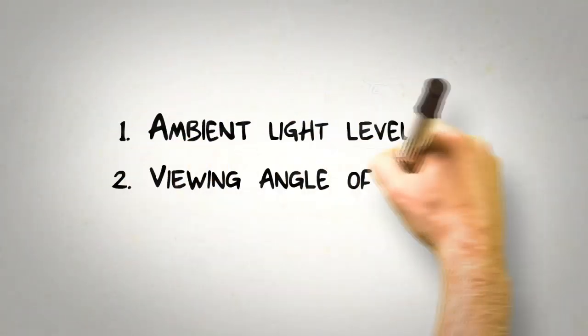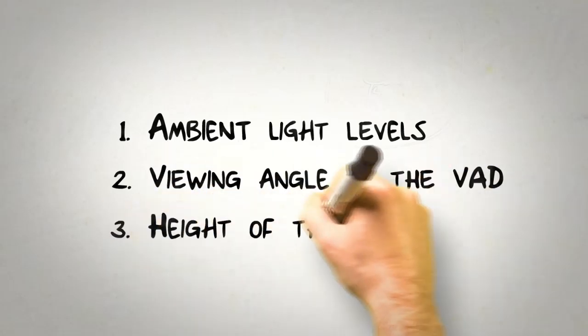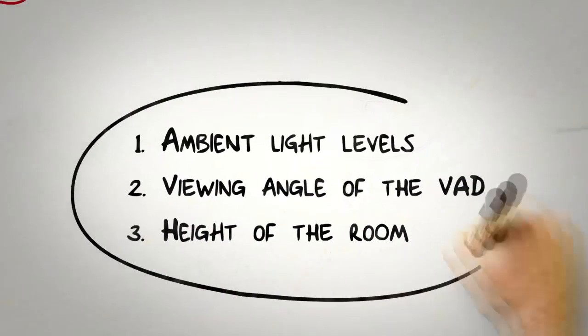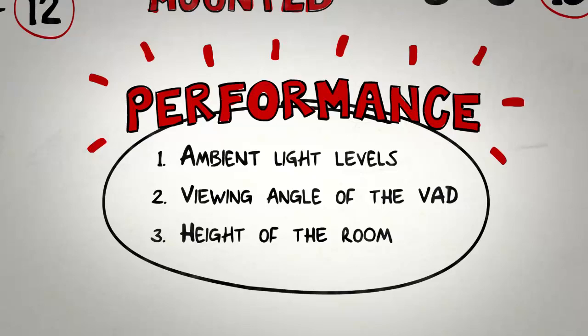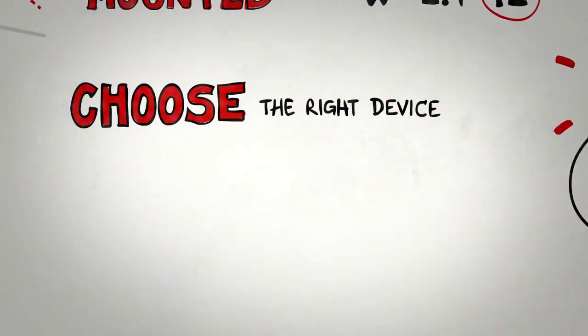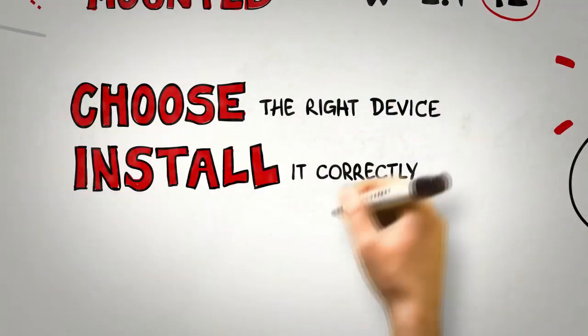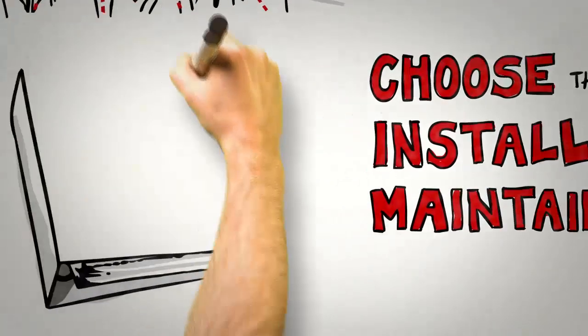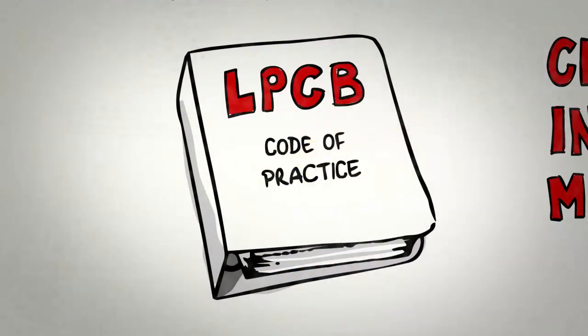Ambient light levels, the viewing angle of the VAD, as well as the height and room dimensions, all impact on the performance of the device. So it's important to make sure you choose the right device, as well as installing it correctly to maintain a compliant solution. The LPCB code of practice provides you with all the information you'll need.